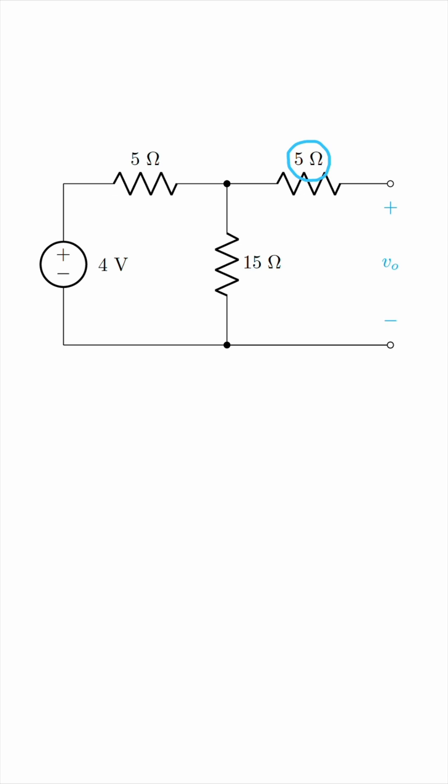So overall, the circuit we started with turned out to be just a voltage source in series with two resistors, and the open circuit voltage V0 we're trying to find